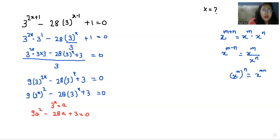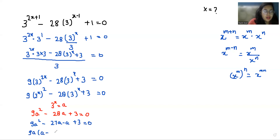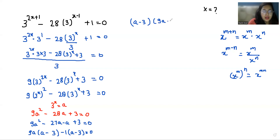We can do the middle term split here. We write this as 9a² minus 27a minus a plus 3 equals 0. From the first two terms I can take 9a as common, leaving (a minus 3). From the last two terms I take minus 1 as common, also leaving (a minus 3). Taking (a minus 3) as common gives (a minus 3)(9a minus 1) equals 0.